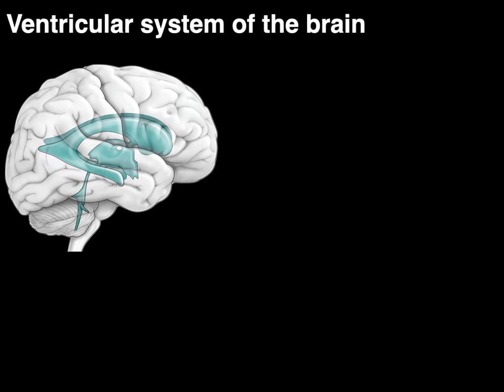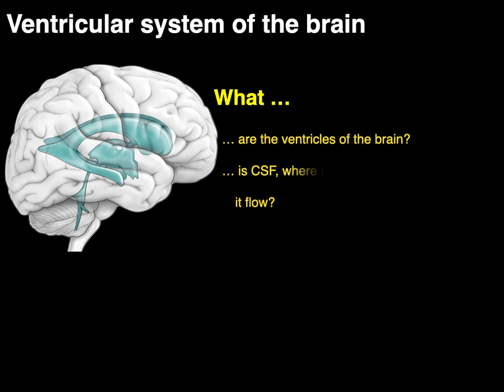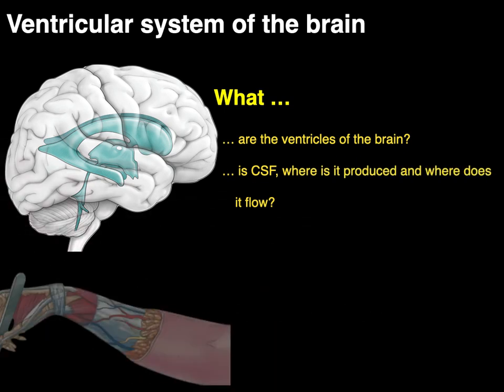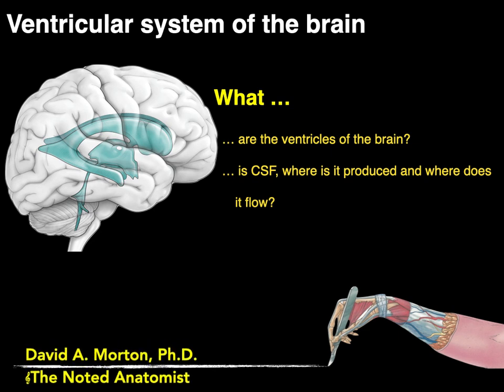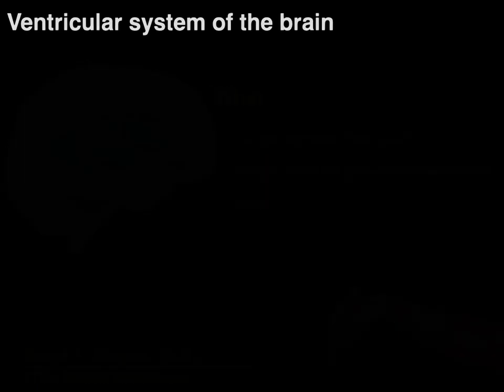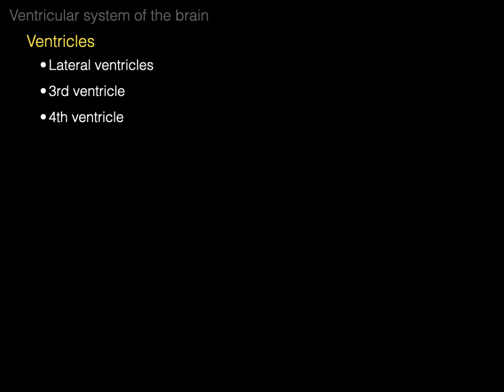We're going to talk about the ventricular system of the brain and answer the questions: what are the ventricles of the brain, what is CSF, where is it produced, and where does it flow? My name is Dr. Morton and I'm the noted anatomist. The ventricles consist of the following: two lateral ventricles, a third and a fourth ventricle.